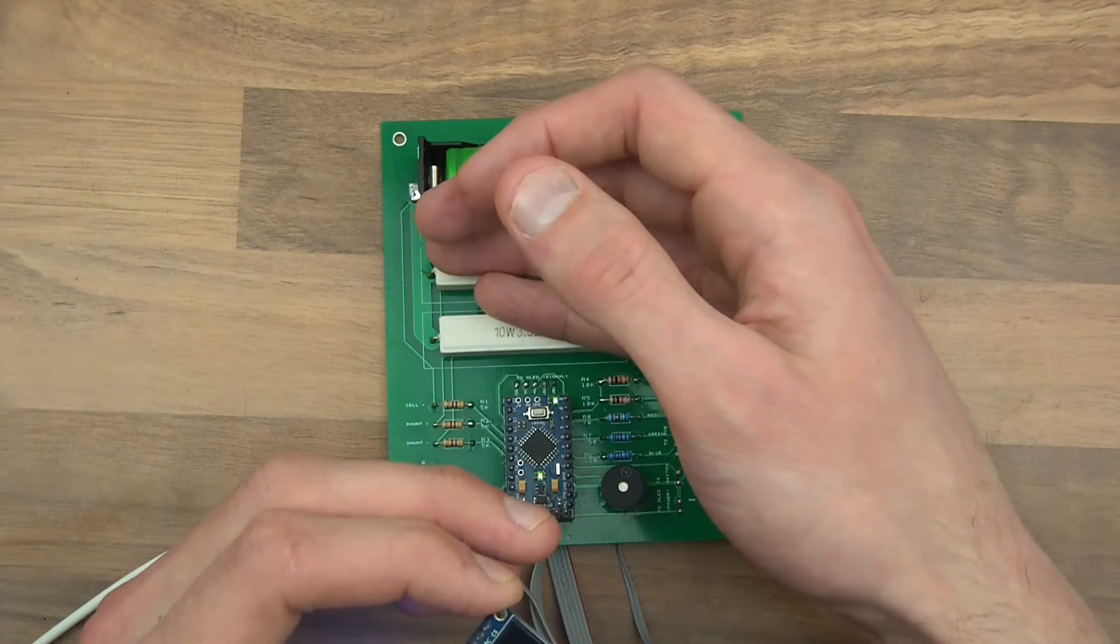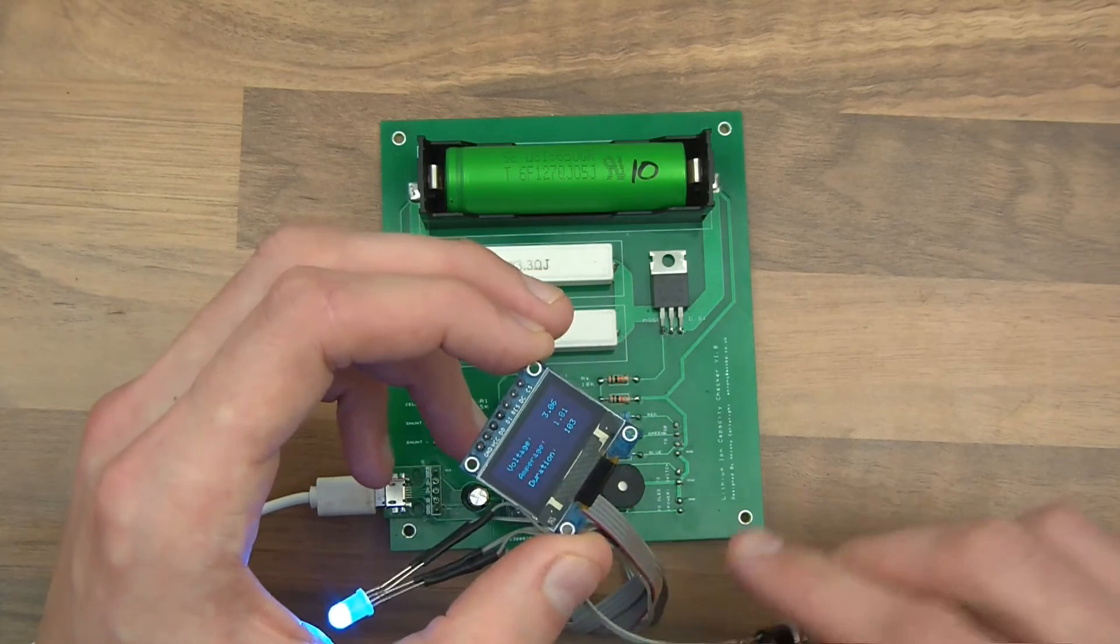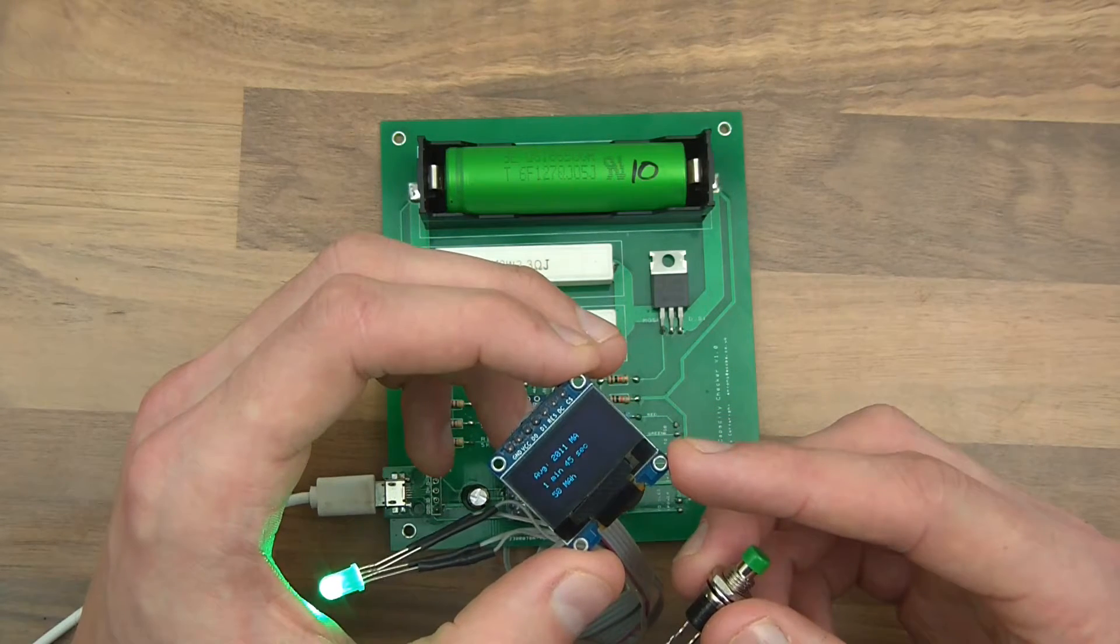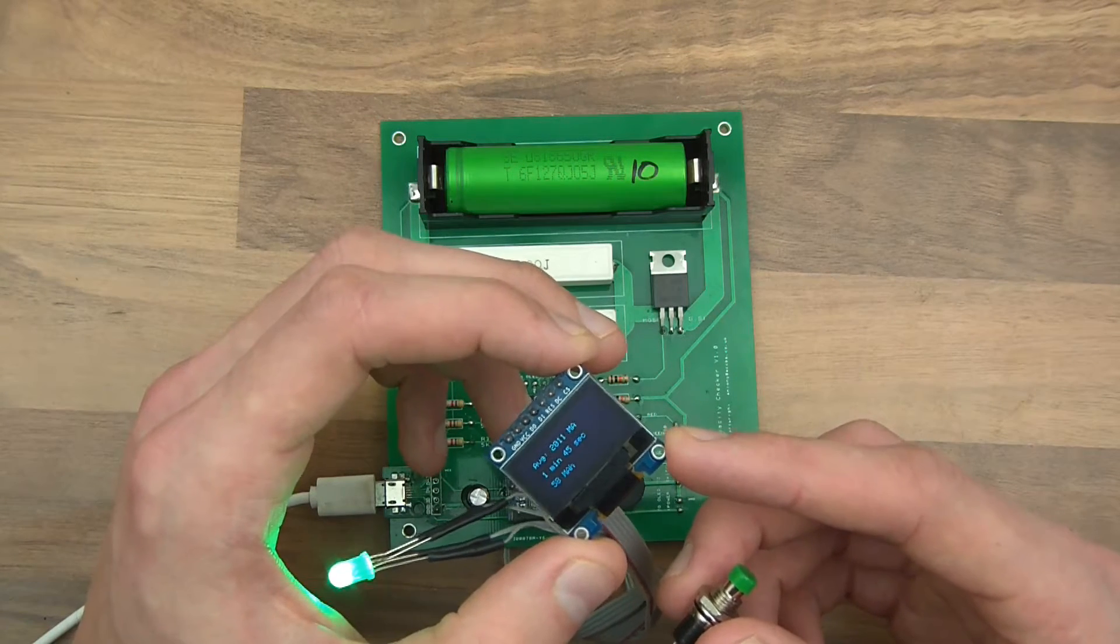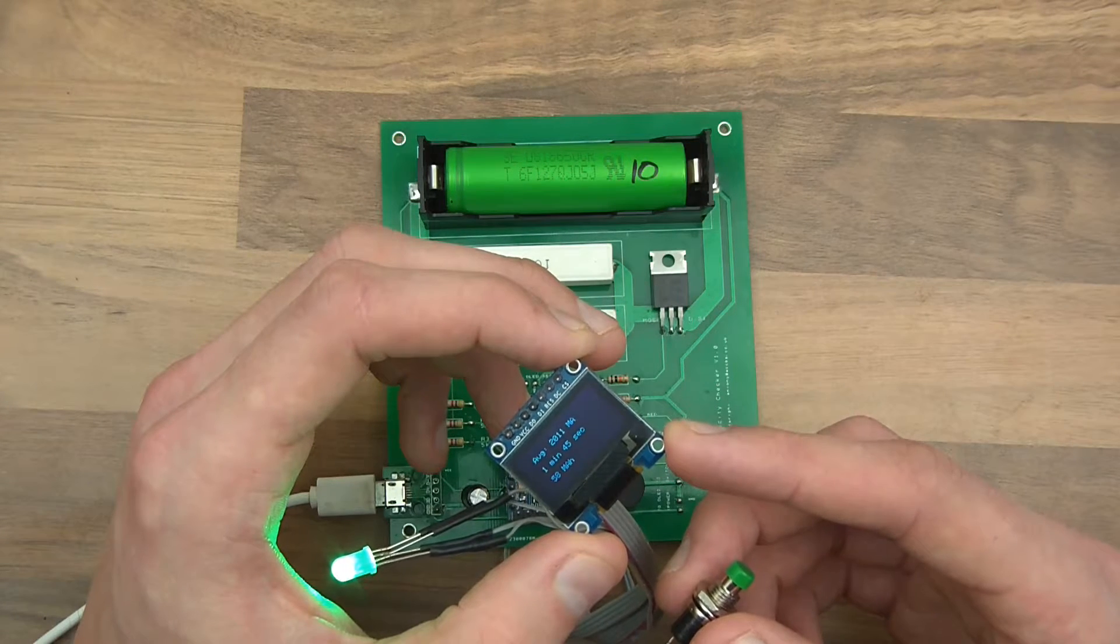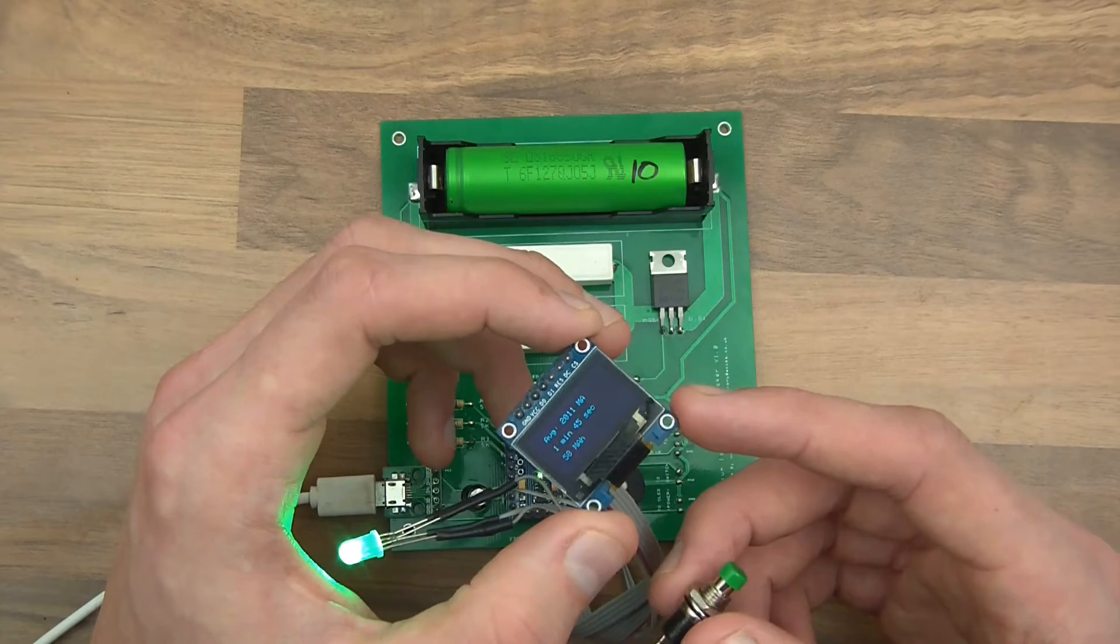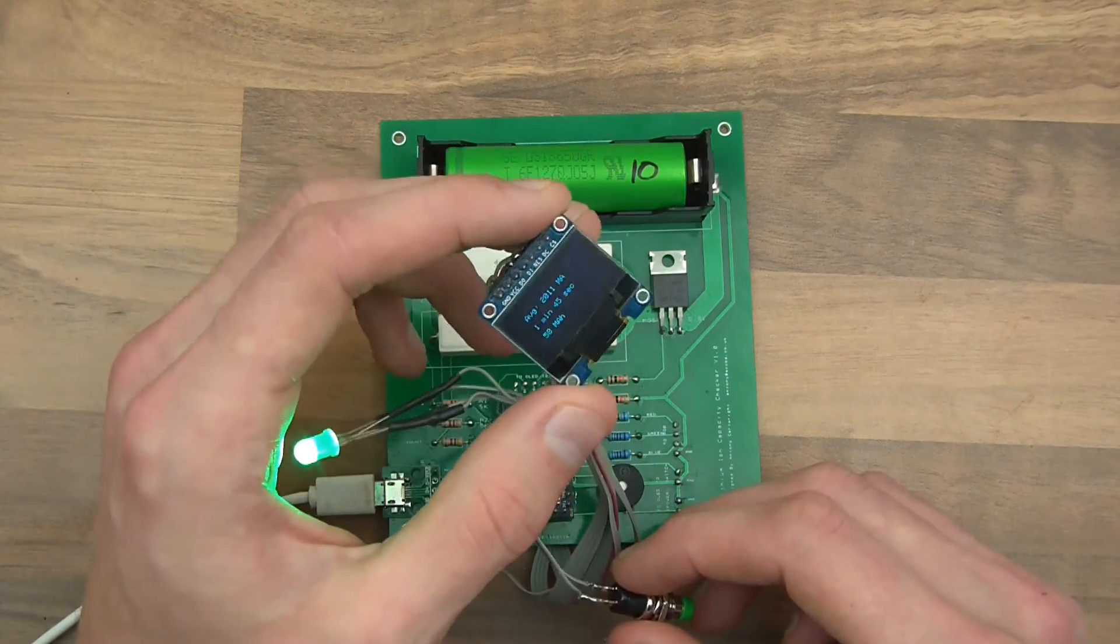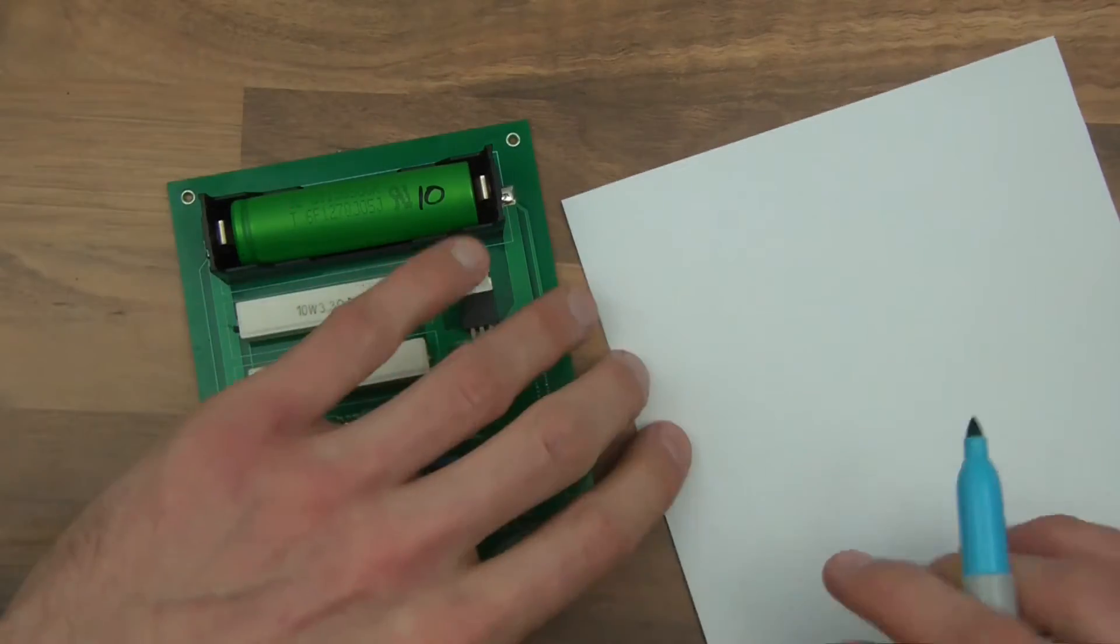Okay, so it's discharged at an average of two amps and it lasted for one minute and 45 seconds, which means it's a 58 milliamp hour cell. Of course that was not very good but at the same time it wasn't charged. Anyway, you can see the thing works but I want to upgrade it. I want to make some changes. So what do I want to do? Let me just get my pen. The first thing I need to do is investigate that voltage sag thing.